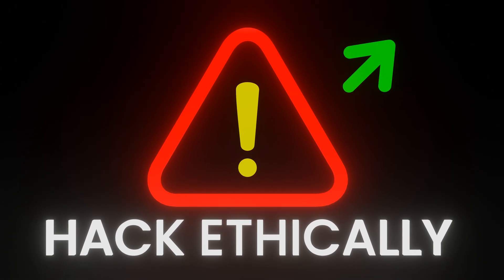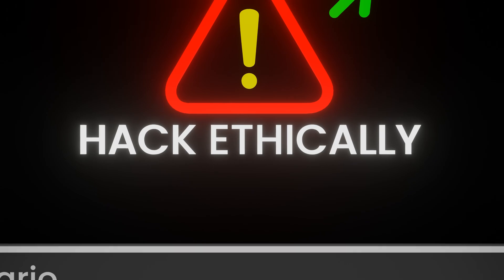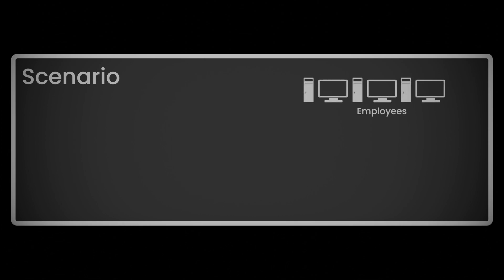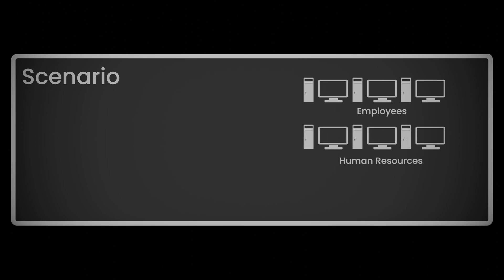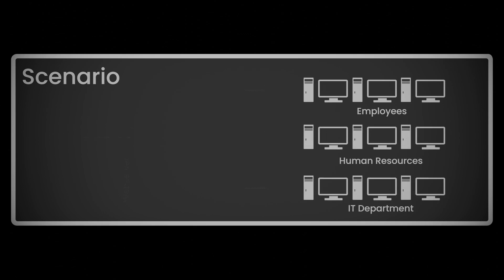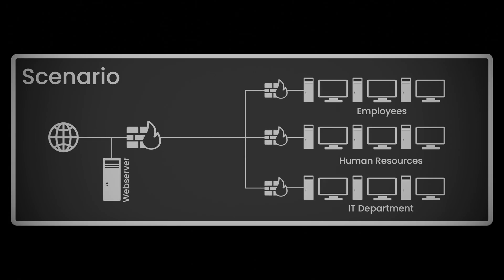Let's look at what it means to apply these phases in a hypothetical example scenario. We have a small company network with some employees, an HR department, and an IT department. This network has one server reachable over the internet, some employee computers, a file server, and a domain controller. The company owner has hired us to perform a test to see if we can access their valuable corporate secrets.